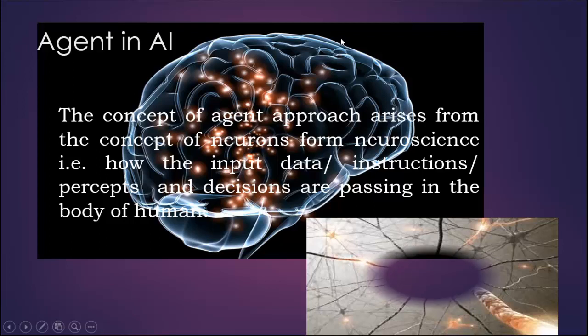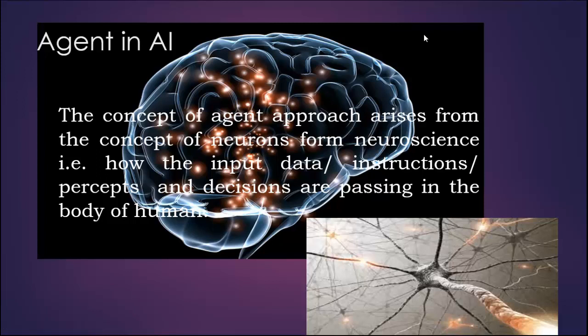How can we define agent in AI? The concept of agent approach arises from the concept of neurons from neuroscience. That is how the input data or instructions or percepts and decisions are passing in the body of human. The word percept is coming from the word perception.